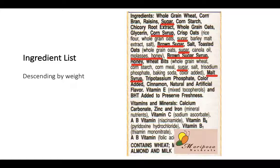First, check the servings per container — there are two servings. So if you drink the whole container, you'd consume 56 grams of sugar. The label currently won't tell you if it's added or natural, so you need to look at the ingredient list. The ingredients are all coming from fruits and vegetables, but this product is really misleading because you're essentially just drinking fruit juice, not the vegetables you think you're getting. And it is significantly lacking dietary fiber, which helps slow the absorption of sugars.